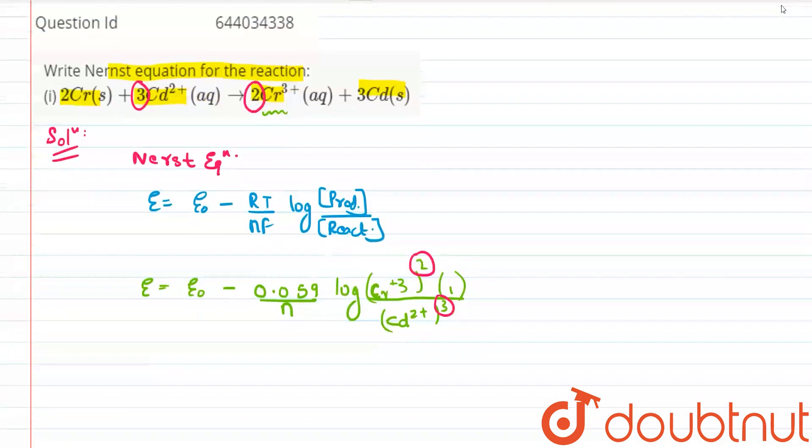Now we have to calculate this value of N. Let us try to write down this reaction once again: 2Cr plus 3Cd2+ goes to 2Cr3+ plus 3Cd.